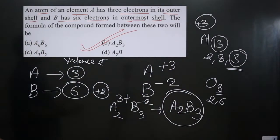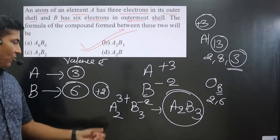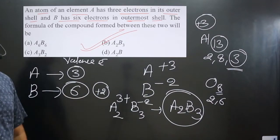From the valence electron we determine the charge, and then we balance the charge. Once we balance the charge we can get the chemical formula. This is what we did in the question. If you like this video, please share and subscribe to the channel.